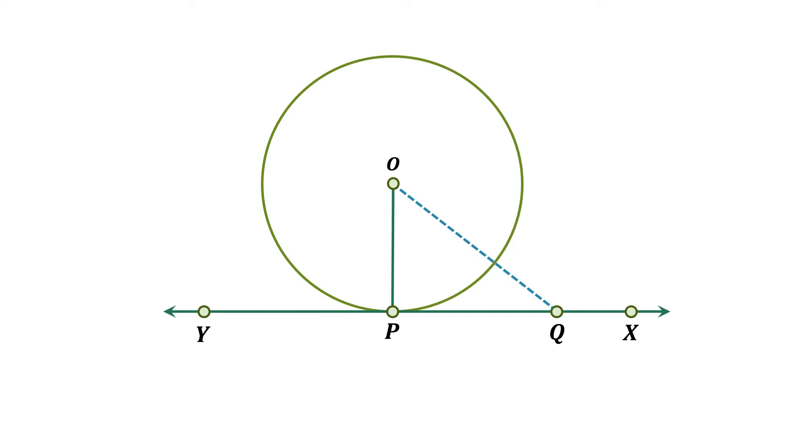In this case, angle OQP will be an acute angle. There could be another location for point Q, where angle OQP may be a right angle. But in this case, Q will be inside the circle and xy will turn into secant line.